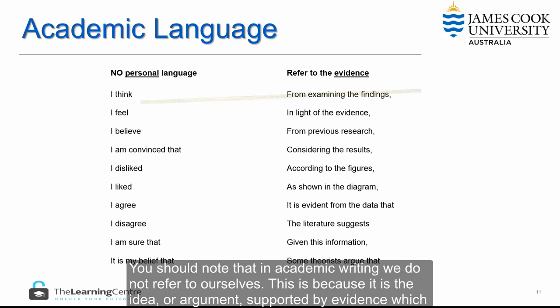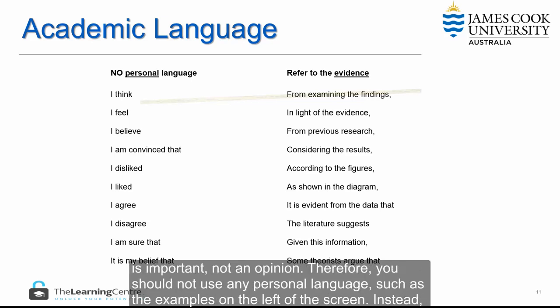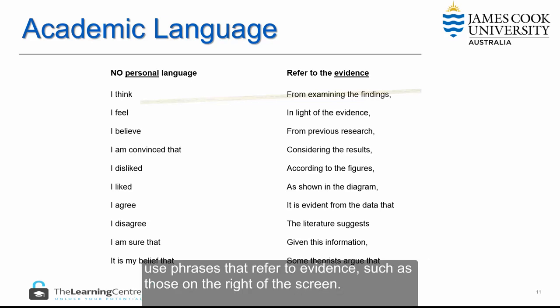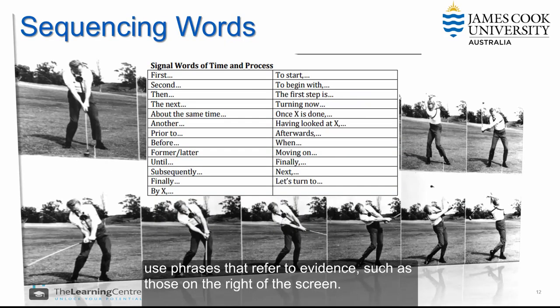You should note that in academic writing we do not refer to ourselves. This is because it is the idea or argument supported by evidence which is important, not an opinion. Therefore, you should not use any personal language, such as the examples on the left of the screen. Instead, use phrases that refer to evidence, such as those on the right of the screen.